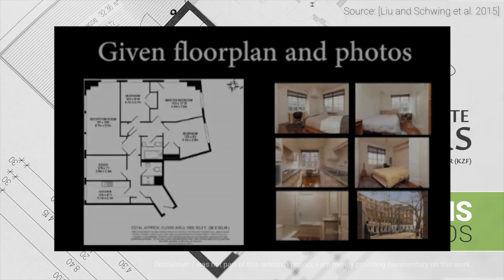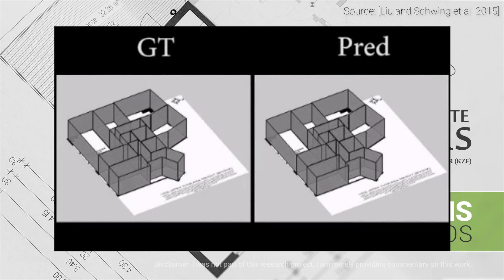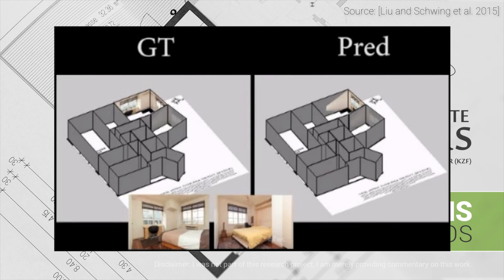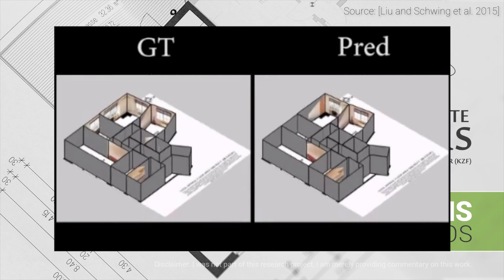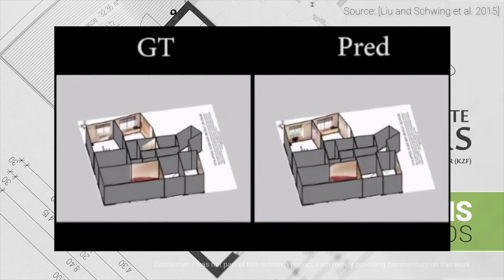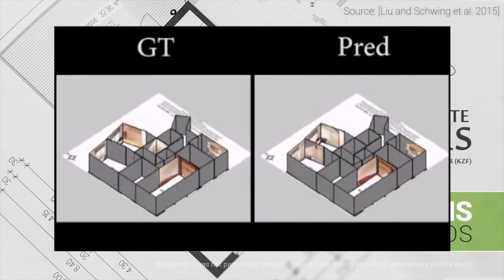Beyond just looking at the photos, we also have access to a large swath of learning algorithms that can reliably classify whether we are looking at a bathroom or a living room. There are even more constraints to adhere to in order to aggressively reduce the number of physical configurations — make sure to have a look at the paper for details, there are lots of cool tricks described there.